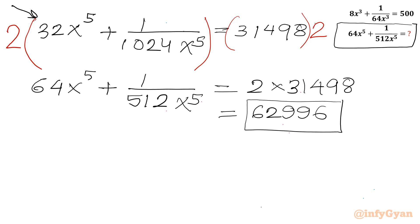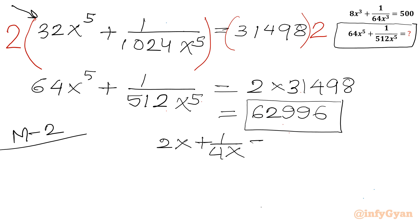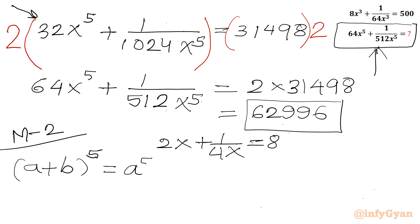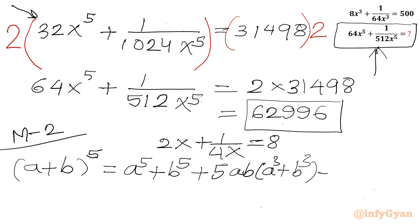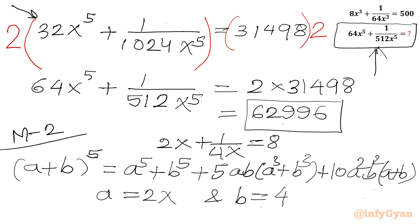This was method number 1. Let us see method number 2. Starting from 2x + 1/(4x) = 8, I will use the binomial expansion for (a+b)⁵, since we need to calculate the fifth power. The expansion is a⁵ + b⁵ + 5ab(a³ + b³) + 10a²b²(a+b), using Pascal's triangle method.